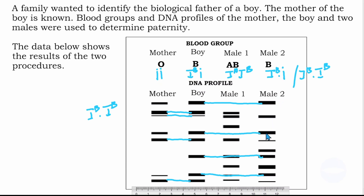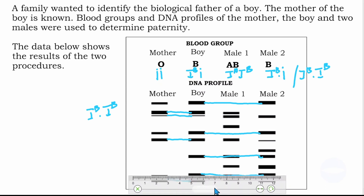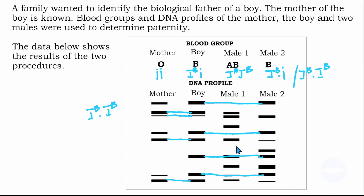So that's how we work with a DNA profile. You need to match the bands using a ruler — it's a simple way of matching the bands. We find that male 2 is the biological father.